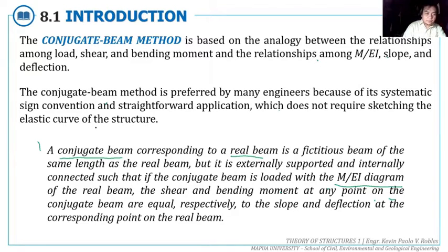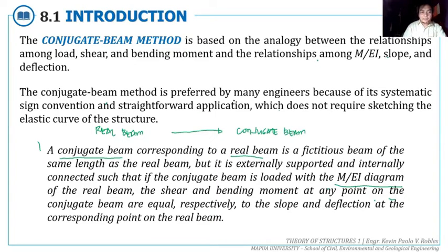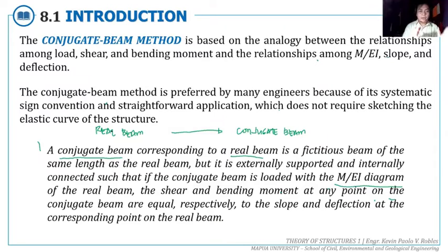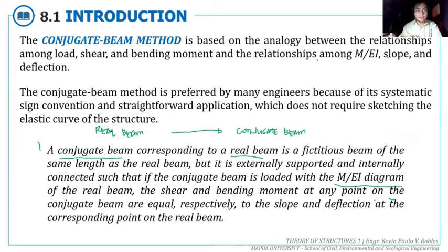For this method, first we have to have the real beam — the actual beam with its actual loads. Then from that real beam, we draw or produce its conjugate beam. We simply copy the length: whatever the length of the real beam, that will also be the length of the conjugate beam. Then from the real beam, we draw the moment diagram. That moment diagram of the real beam is transferred to the conjugate beam and it becomes the load of the conjugate beam.